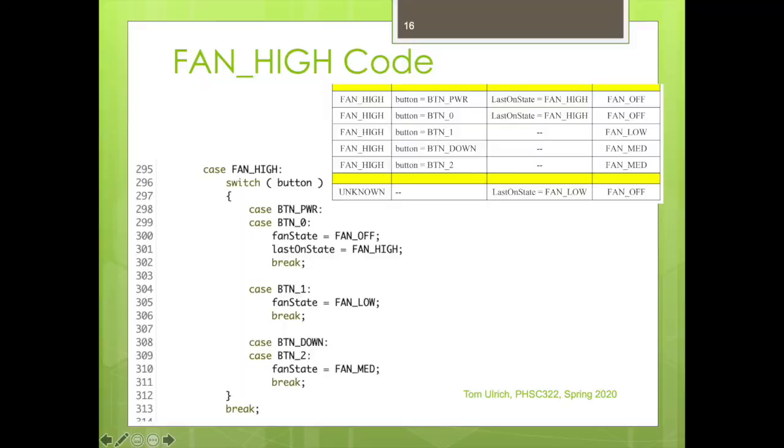Now, likewise, with the high code, you'll see exactly the same logic. So at line 295, I say, okay, here's what we do if the fan state is high. We have a nested switch statement at 296. And that goes through line 312. And again, if you're in high and you push the power, or if you're in high and you push zero, in both cases, it's going to go to fan off. And in both cases, it's going to say last on state was high. If you're in high and you press a one, it's just going to jump to low. If you're in high and you press either down or a two, you're going to go to medium. You're going to go down one. Yeah, see that? Okay.